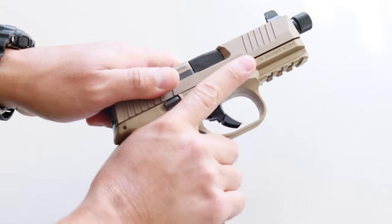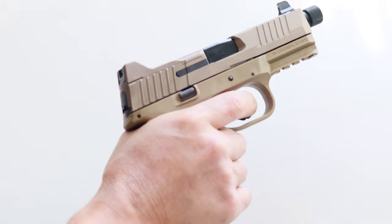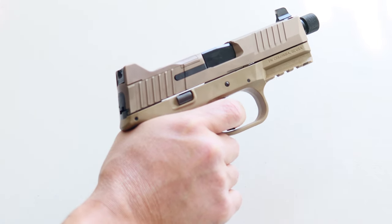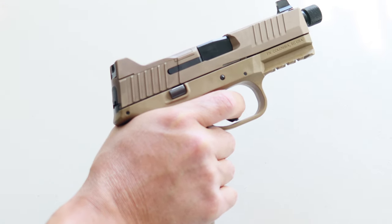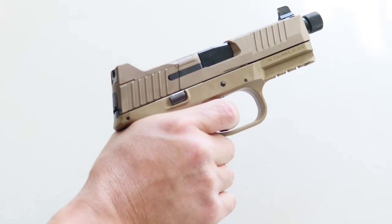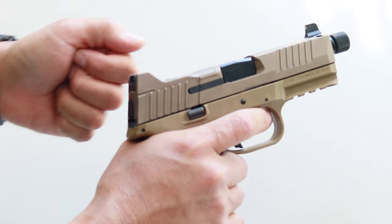Let's do a function check. Work the slide, pull the trigger, but don't let it go. Work the slide again, release the trigger. You'll feel the trigger reset, and then pull it again. You'll feel and hear it click. If it does, you're good to go.